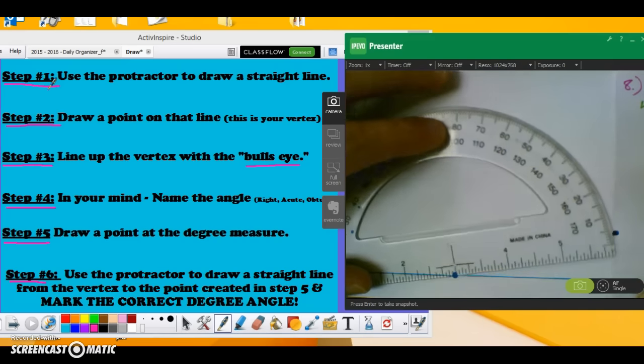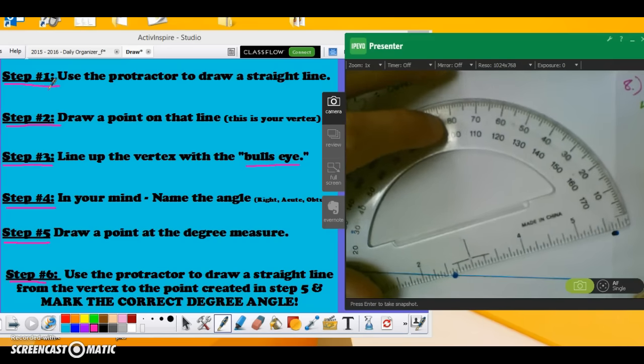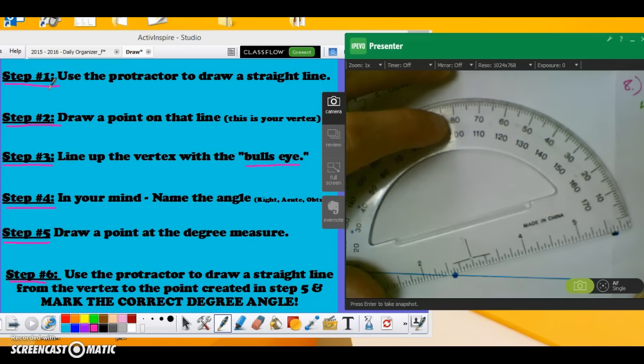After we've drawn that point, I can now play connect the dots. I'm just going to go ahead and take my protractor, turn it into a ruler and from my vertex line, draw a line segment that connects the vertex all the way out to this point. And I'm good to go.